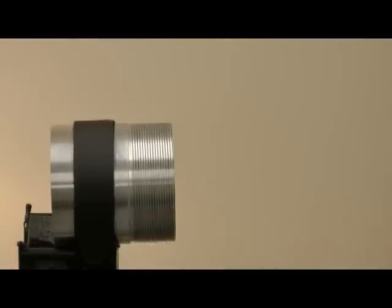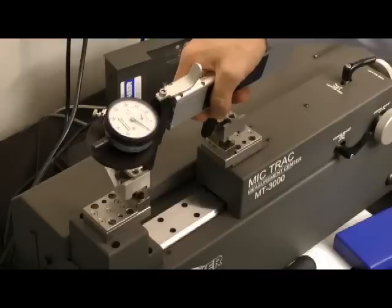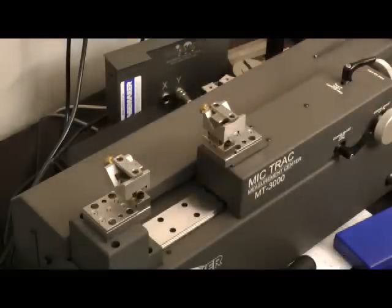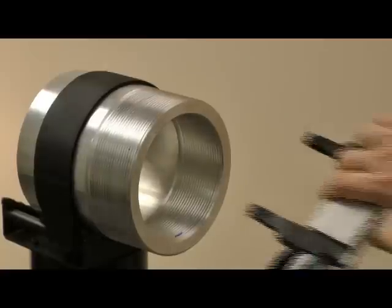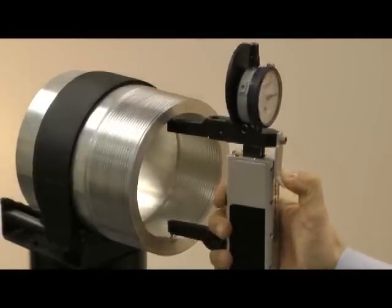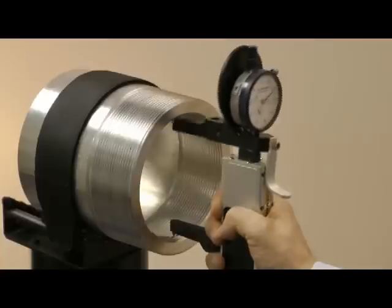Go and no-go gauges can't inspect pitch diameter. Mic over wire measurements can't inspect internal connections. GaugeMaker really is the best solution, providing a high level of accuracy and versatility. Simply sweep the gauge back and forth and verify the dimensional size of the thread.